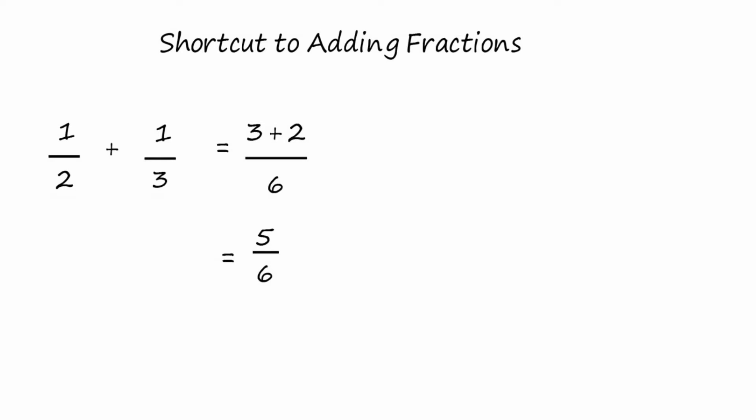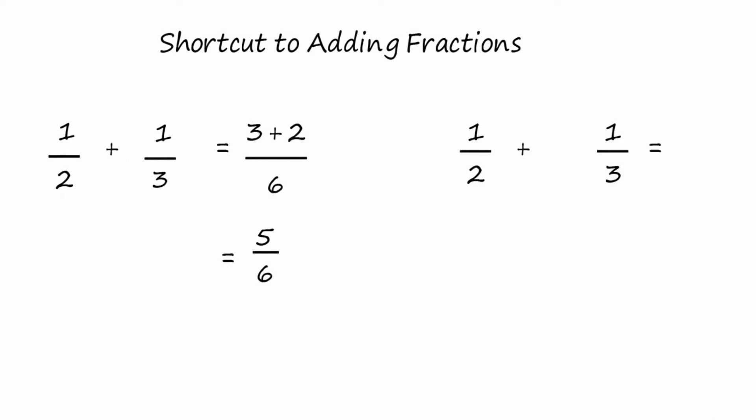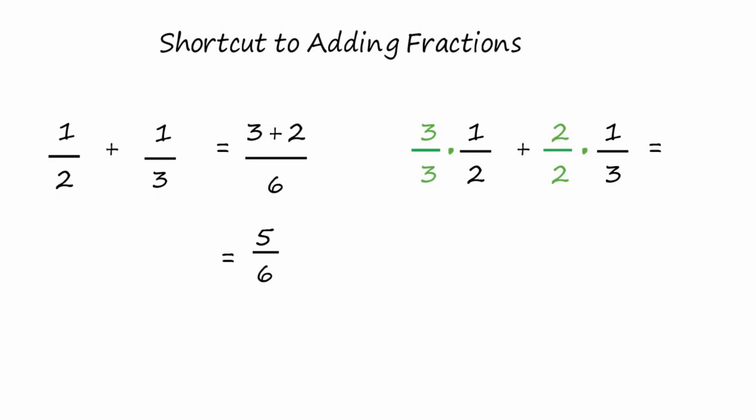Now I'm going to show you what it would look like had we found the lowest common denominator, to show you that the shortcut method works. So take the same example, one-half plus one-third, and the lowest common denominator is six. We multiply the first fraction times three over three, multiply the second fraction by two over two. That makes six in the denominator for both fractions.